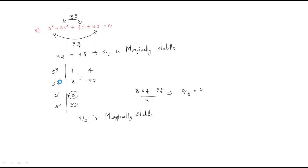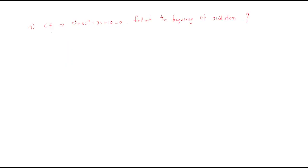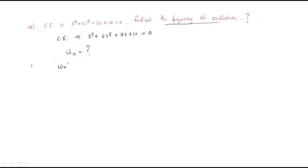The next question: the characteristic equation is s³ + 6s² + 3s + 10 = 0. Find the frequency of oscillations. He is asking for the value of ωn — the natural frequency. To find ωn, we make the even powers of the characteristic equation equal to zero.